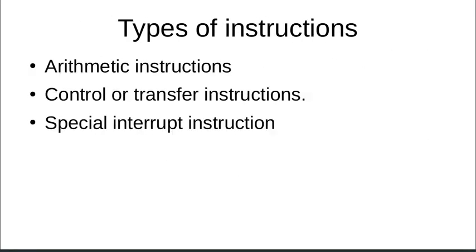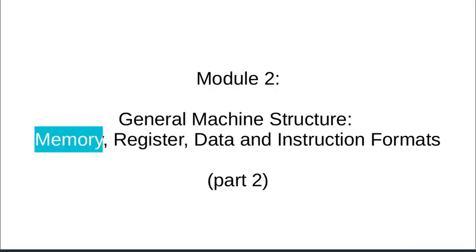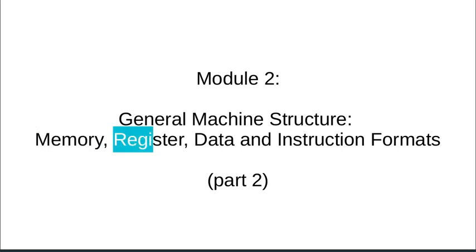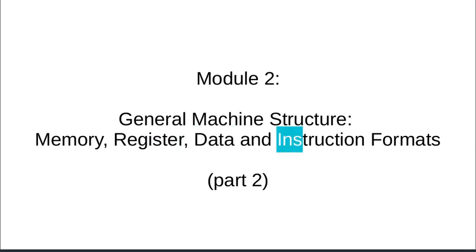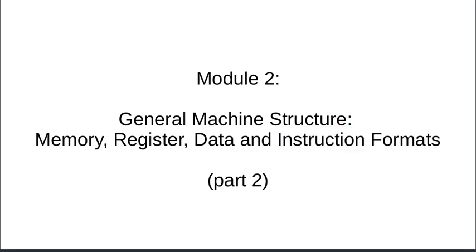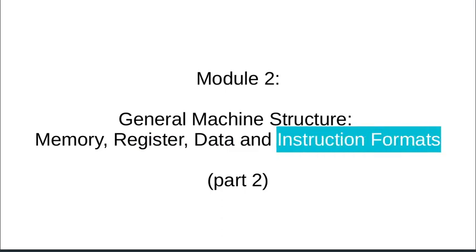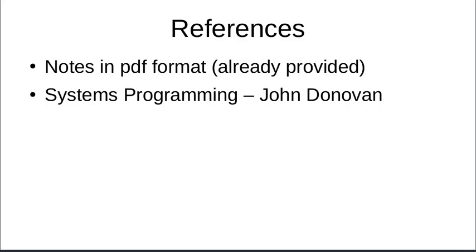The topics covered today include the memory and general machine structure of the IBM 360, registers and register operands, data types, and instruction formats — four of which were discussed. For references, consult the notes already provided and the book by John Donovan.